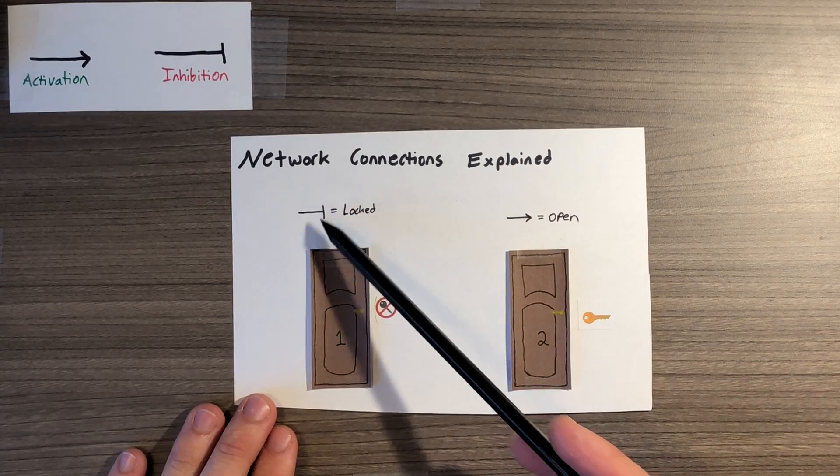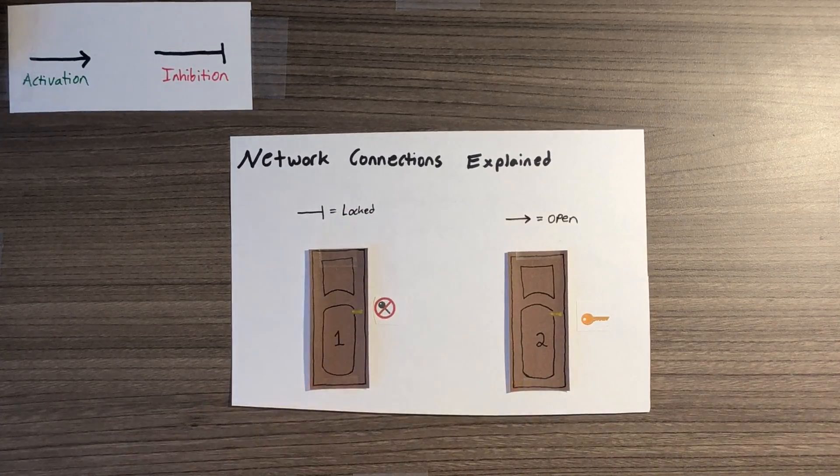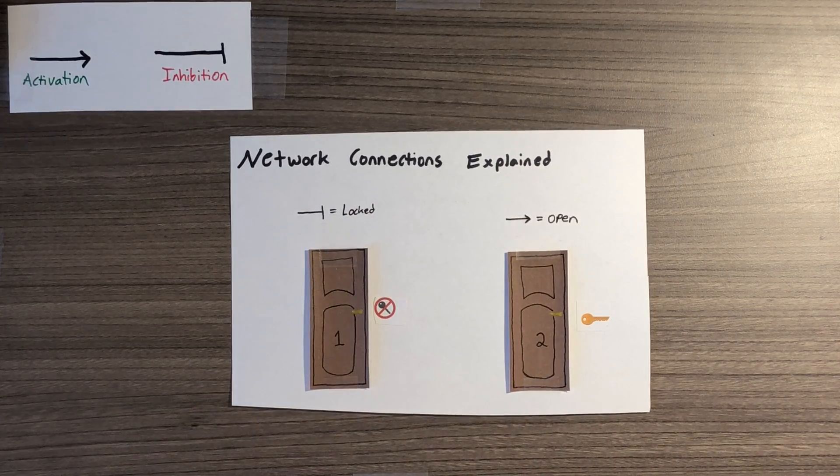If there is a t-bar, you do not have a key and cannot open the door, which means the gene is blocked and cannot continue through and be transcribed.